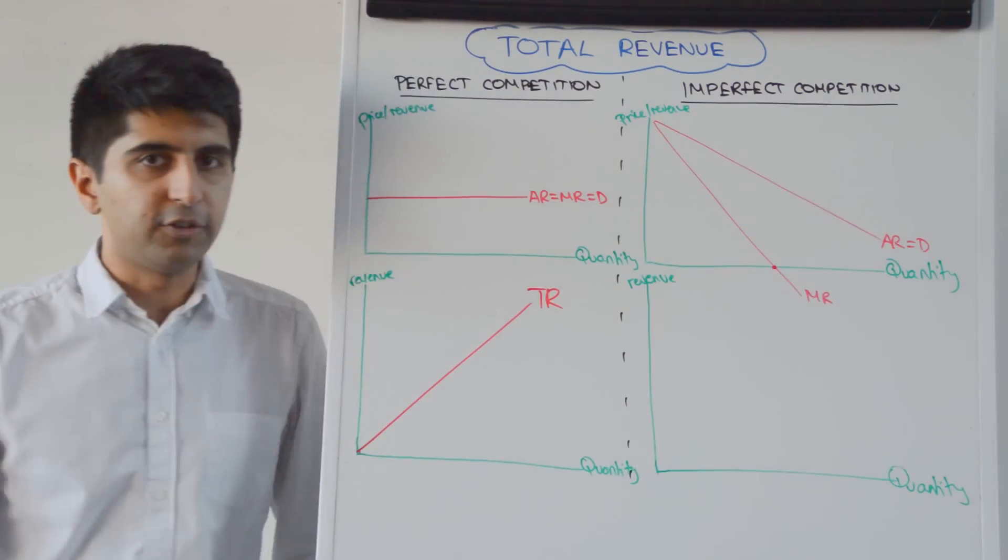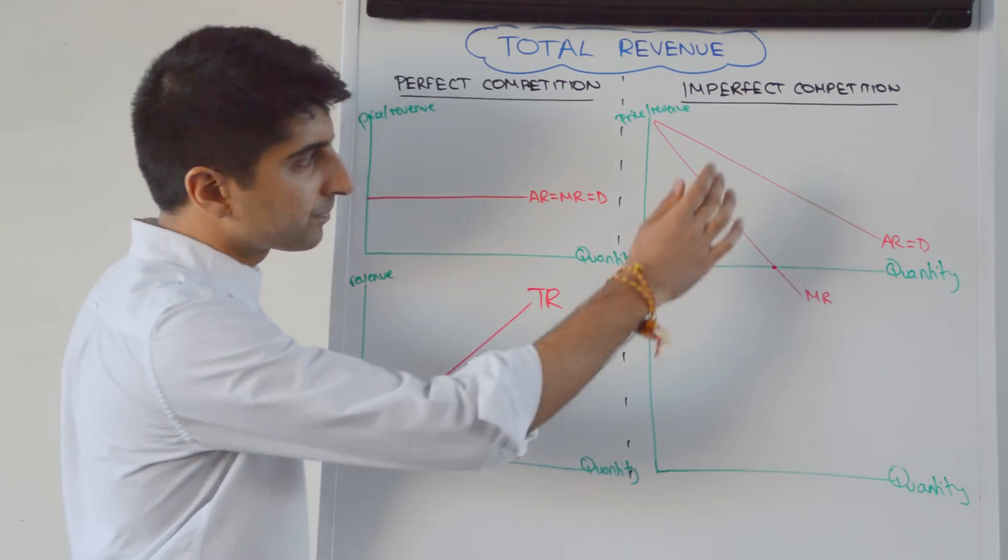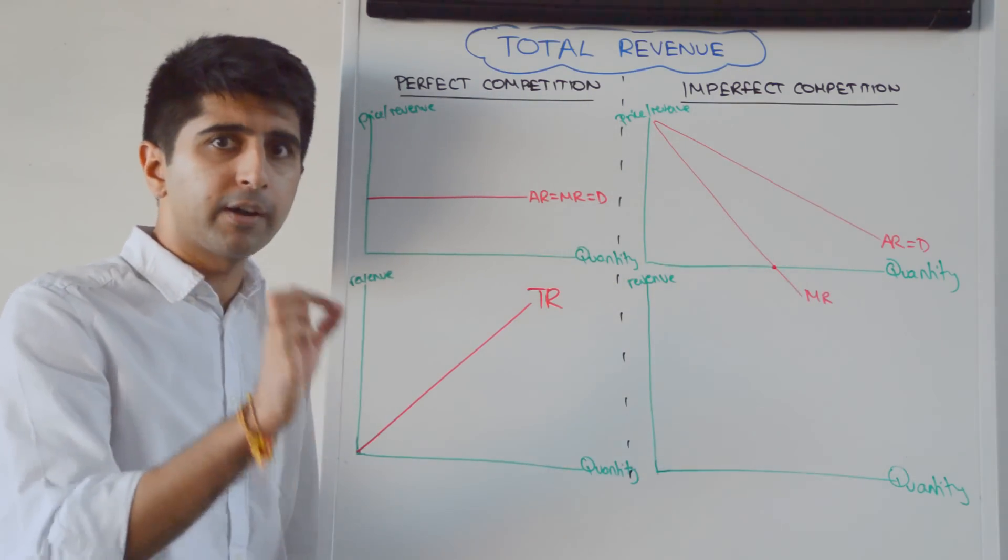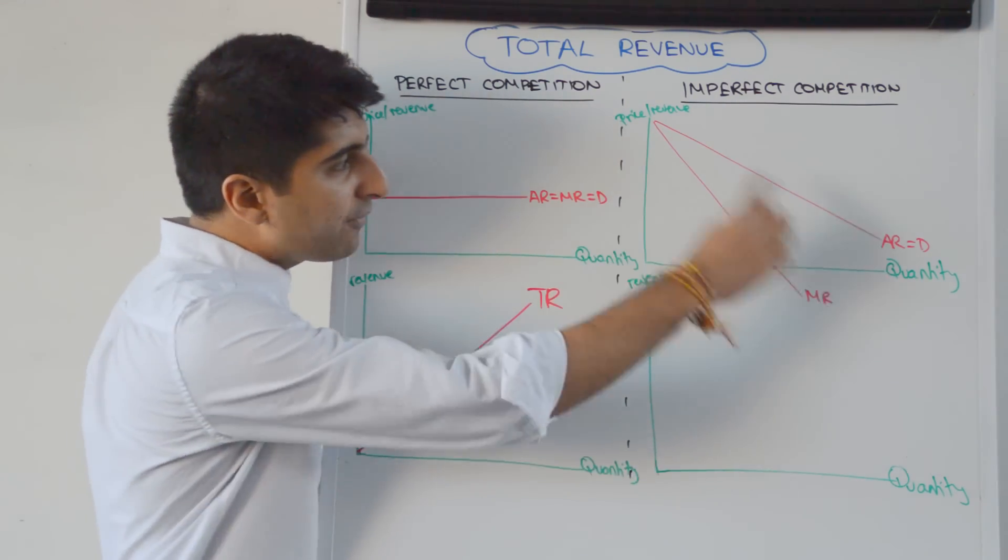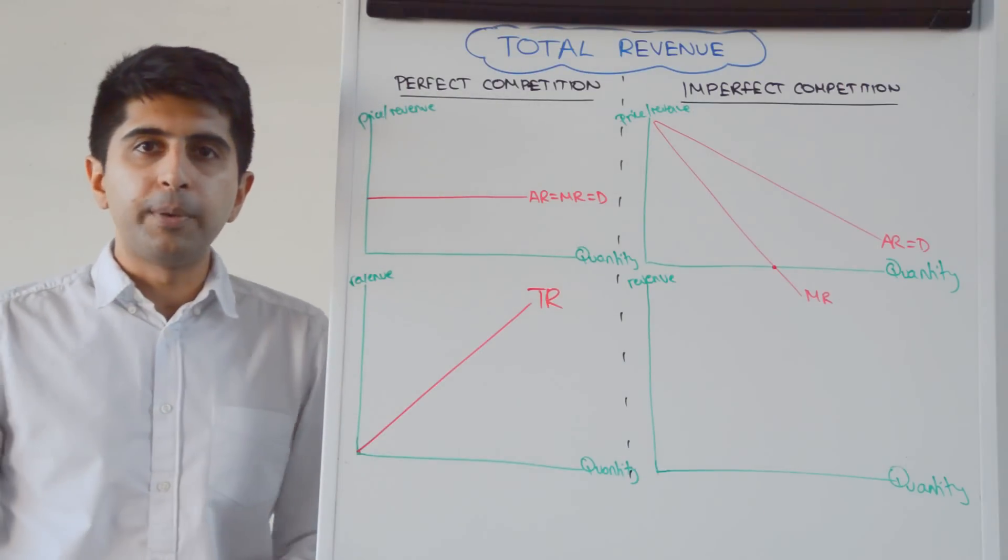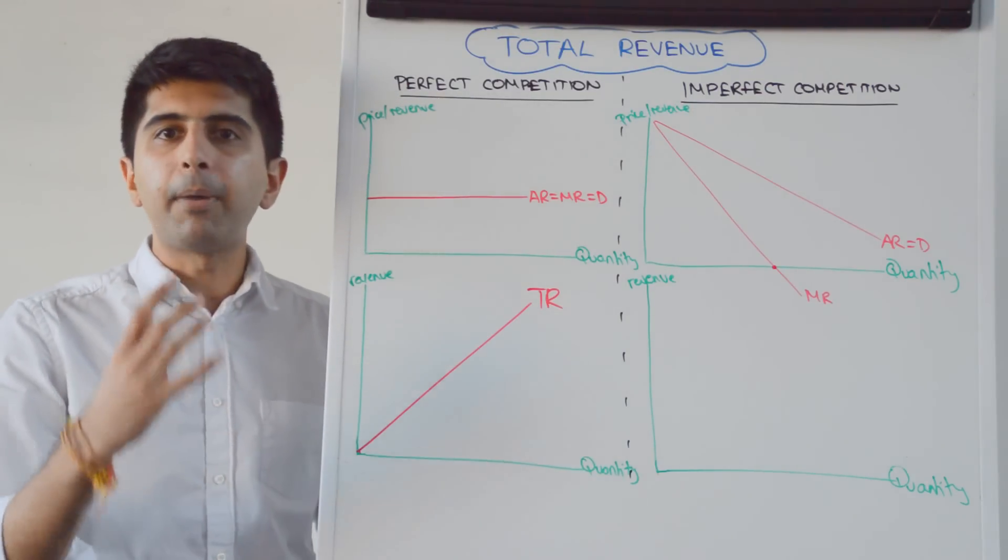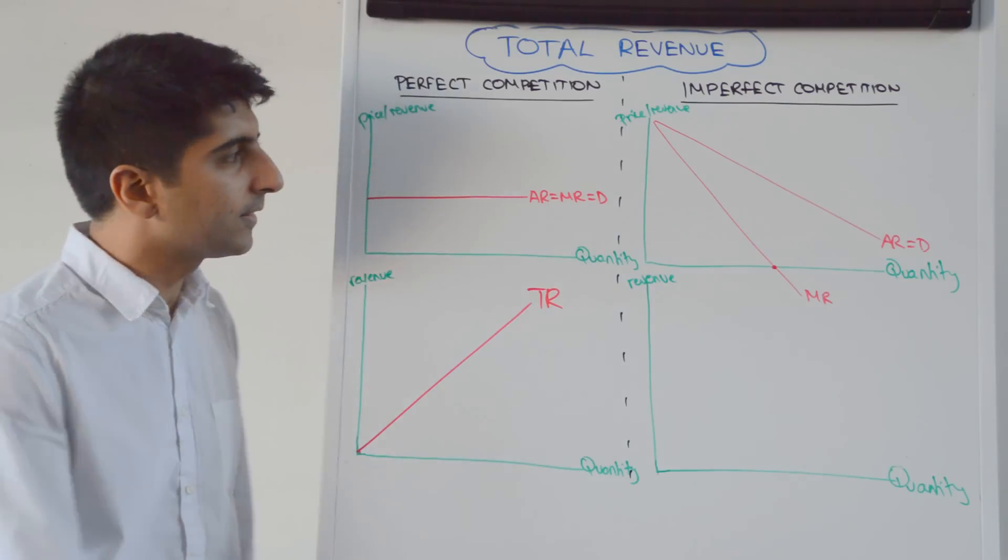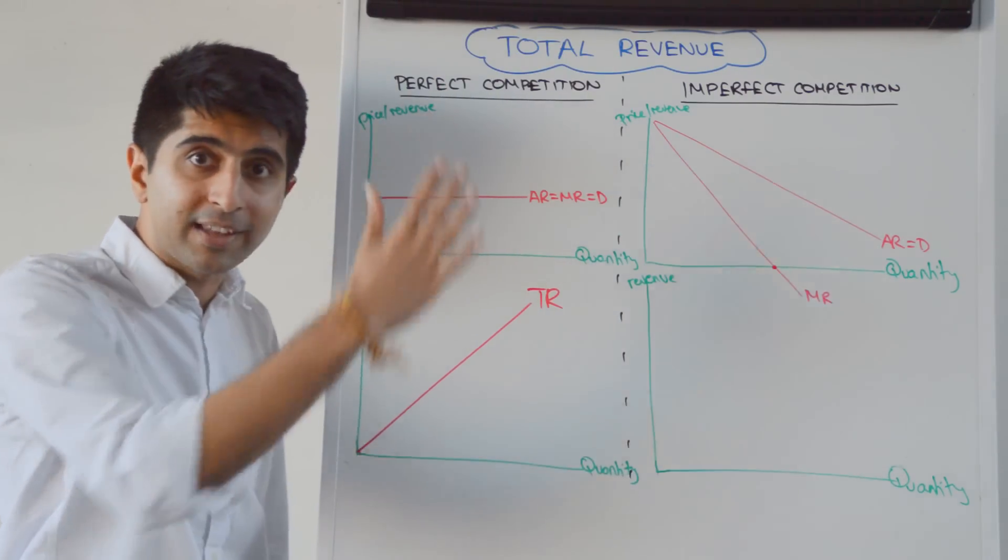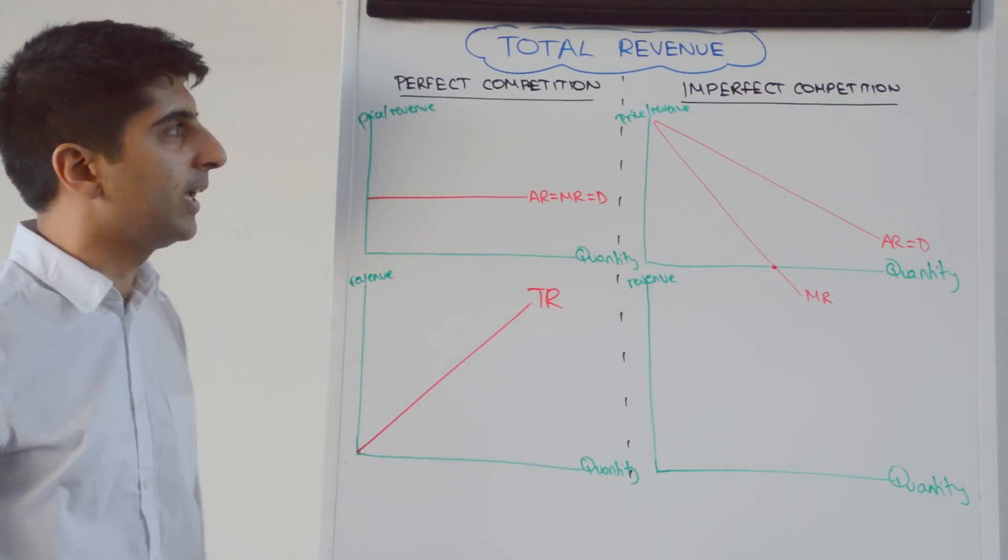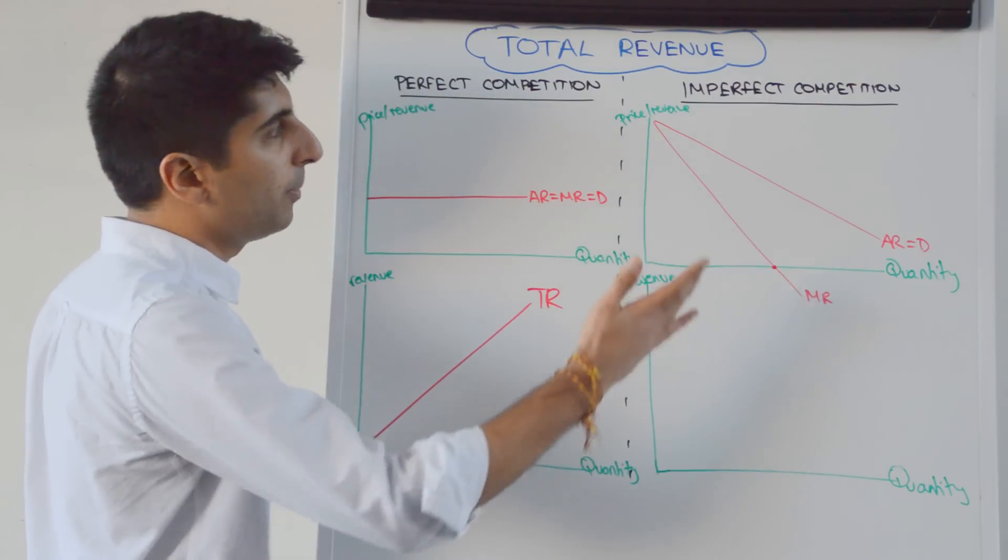In imperfect competition, what does it look like? Well, remember our AR and MR curves from the last video. Average revenue is downward sloping. Why? Because firms are price makers. And they are governed by the demand curve in that sense. So the average revenue is the demand curve.